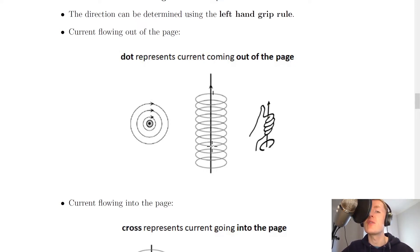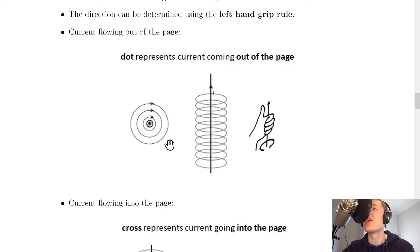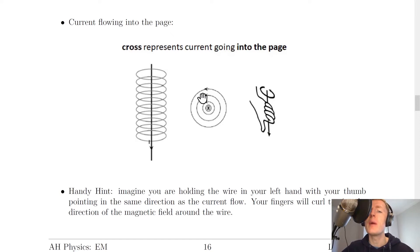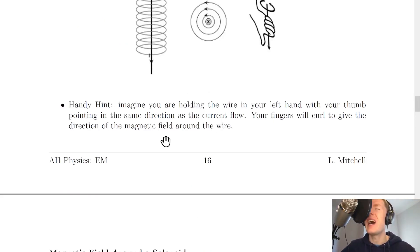To determine the direction of the circular magnetic field, point your thumb in the direction of current flow — in this case out of the page — and your fingers curl around in a clockwise direction, giving the direction of the magnetic field lines. For current flowing into the page, represented by a circle with a cross in the middle, point your left hand into the page and your fingers will curl around in the direction of the magnetic field lines. A handy hint: imagine you're holding the wire in your left hand with your thumb pointing in the direction of current flow — your fingers will curl around to give the direction of the magnetic field.